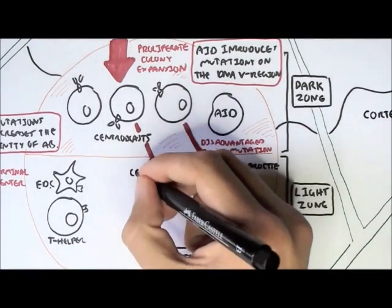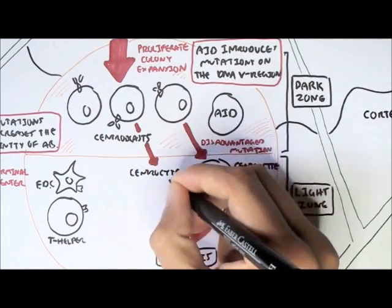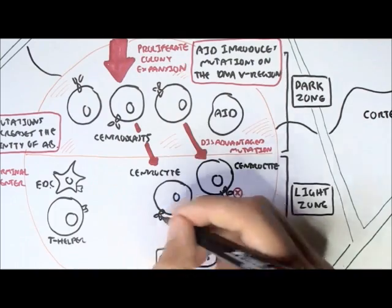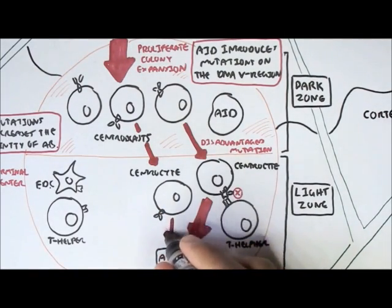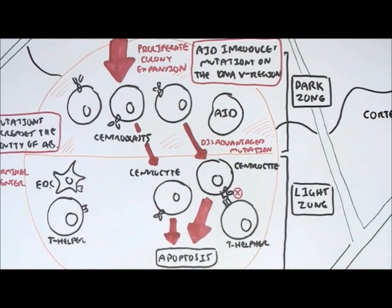Similarly, this centroblast also had a disadvantaged mutation. And so it's not needed by the body, because the antibody does not recognize the antigen. Its affinity decreased. And so it goes through apoptosis.